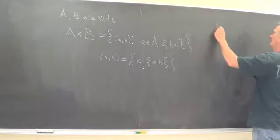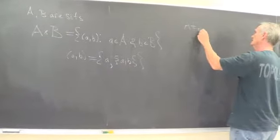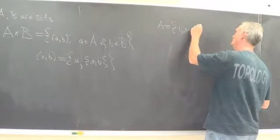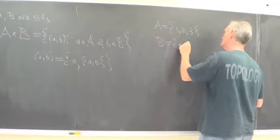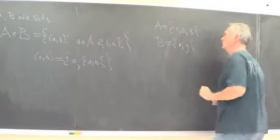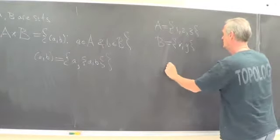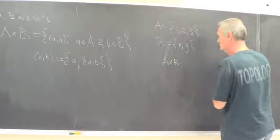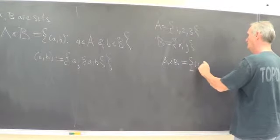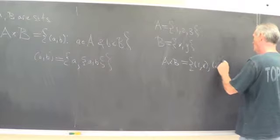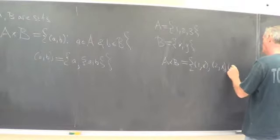Of course, if A is something like the set 1, 2, 3, and B is something like the set X, Y, then the set of ordered pairs A times B, A Cartesian product B would be the set of pairs 1X, 2X, 3X,